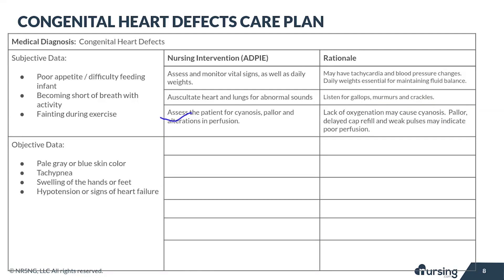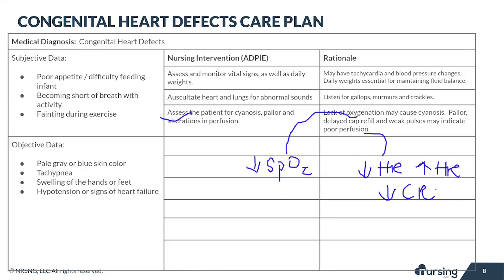Continuing your assessment, look at the patient for cyanosis, pallor, and alterations in perfusion. When oxygen saturations drop severely, you'll see cyanosis. If perfusion is compromised, you're going to see things like weak pulses, a decreased heart rate or compensatory increased heart rate, and decreased capillary refill time as well.